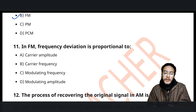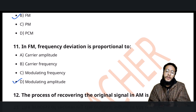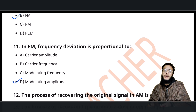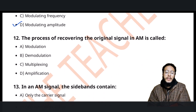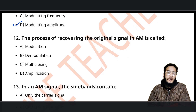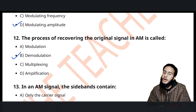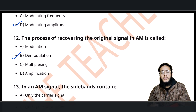In FM, frequency deviation is proportional to the modulating amplitude — always remember it varies according to the modulation amplitude. The process of recovering the original signal is called demodulation. Modulation is when we impose the message signal on the carrier wave.